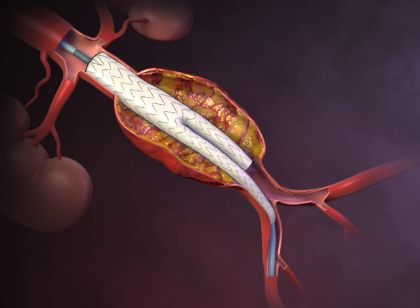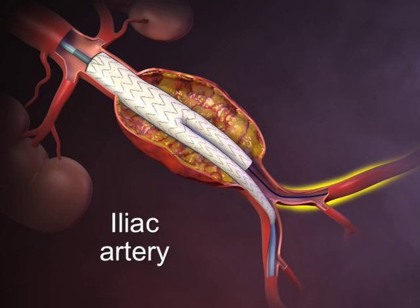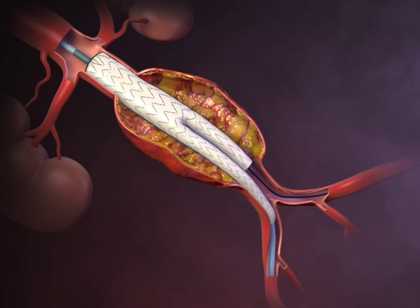A second guide wire is introduced through the contralateral iliac artery into the open lumen of the contralateral limb of the stent graft. The top cap is removed, deploying the suprarenal stent and anchoring the stent graft to the vessel wall.